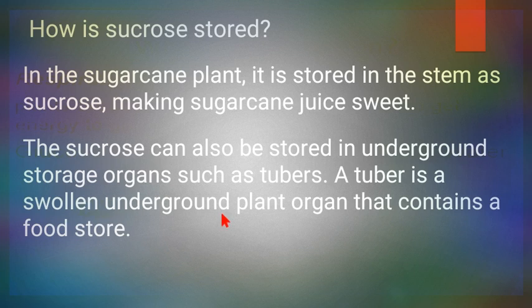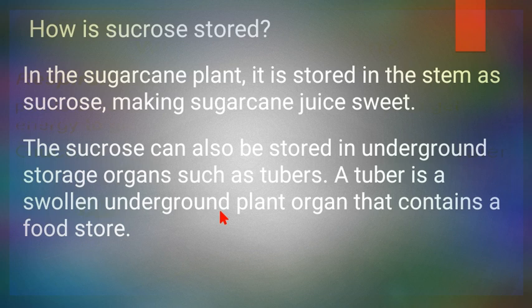Sucrose can also be stored in underground storage organs like tubers. Potato is a stem tuber. In potatoes, beetroot, and other underground storage organs — which include many fruits and vegetables — glucose is stored in the form of sucrose.